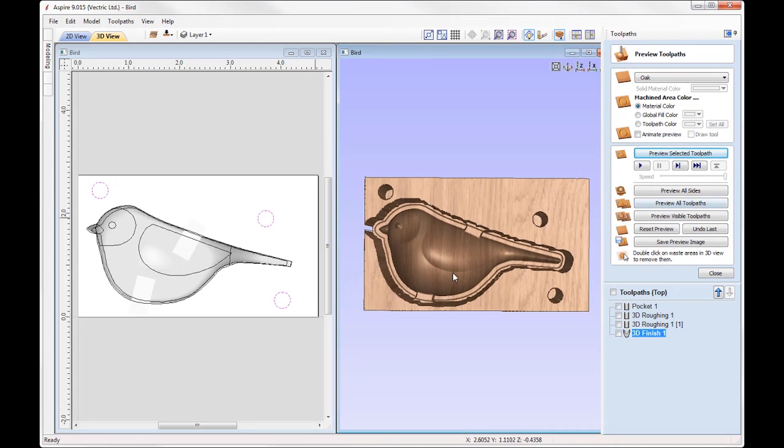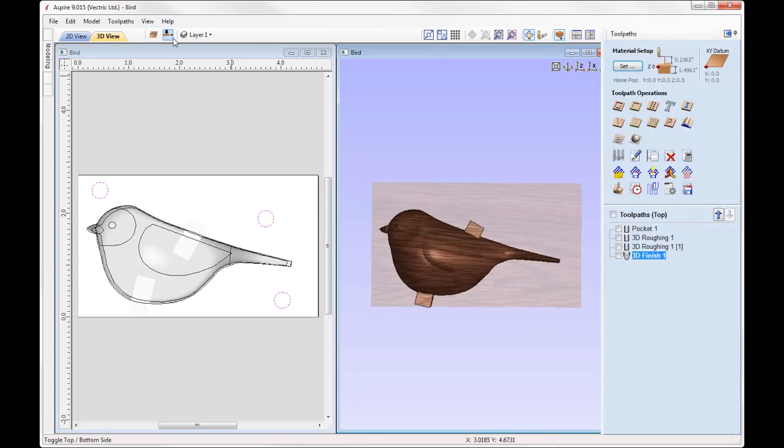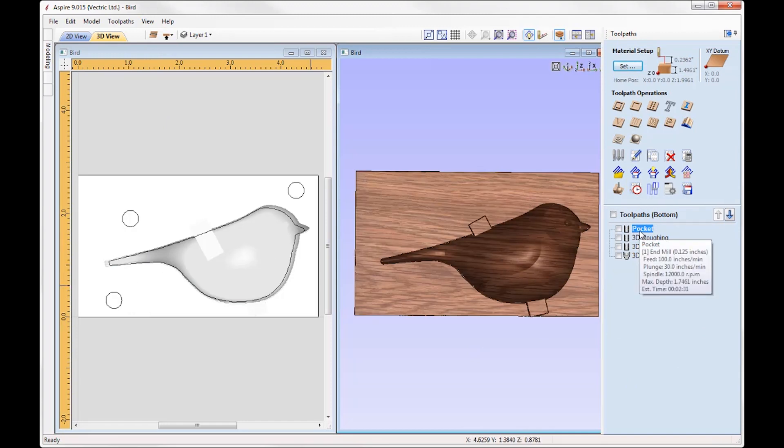So once we're done with the top side we can then take the material block off of the machine, and then our first operation would be to machine the dowel holes directly into the spoil board. Once they've been drilled into the spoil board we can then locate the top side to the machine bed so everything is aligned correctly in X and Y. And we can continue to run the other 3 toolpaths which are pretty much exactly the same as the top side.